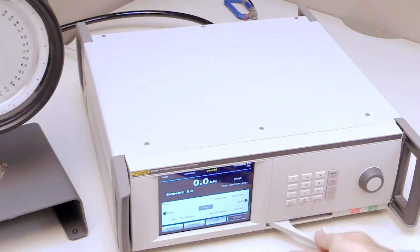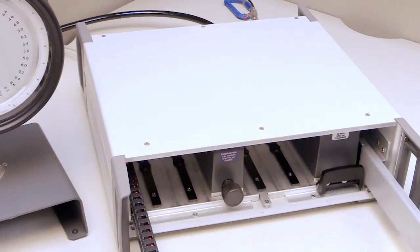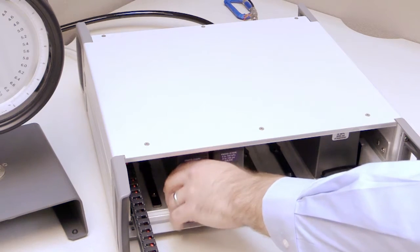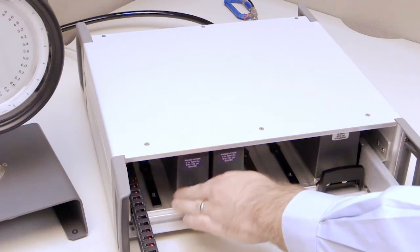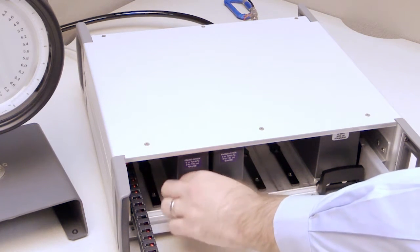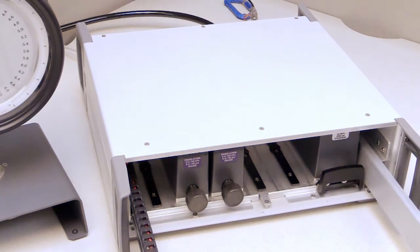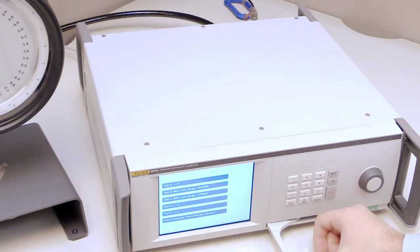The 6270A's modular construction enables it to handle a wide range of pressures. You can install up to five pressure modules in a single 6270A chassis, mixing and matching module types and ranges to get the right combination for your needs.